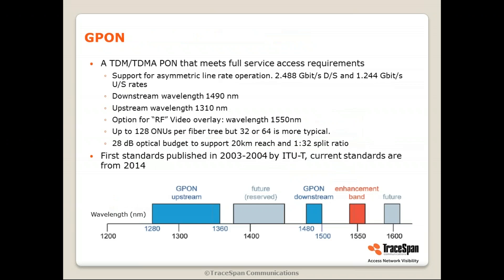Talking specifically about G-PON, G-PON is a TDMA PON — I will talk about TDMA in a few minutes — which meets the full requirements set up by FSAN, Full Service Access Network Group. It supports an asymmetric line rate of about 2.5 gigabits per second downstream and 1.25 gigabits per second upstream. It uses two separate wavelengths, 1490 nm for downstream and 1310 nm for upstream, and the fact that it uses two wavelengths allows it to use a single fiber for both directions, unlike some other technologies which use one fiber for downstream and another for upstream.